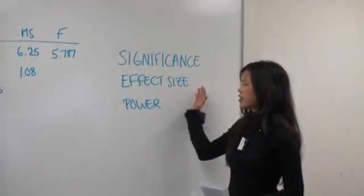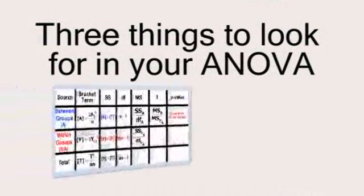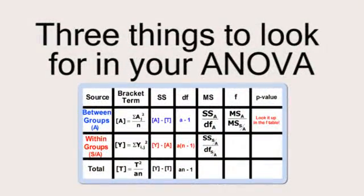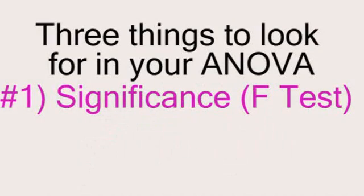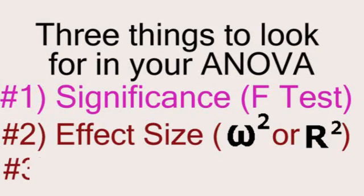Significance, effect size, and power. Those three things — significance, effect size, and power — are always what you want to keep in mind when conducting an ANOVA.